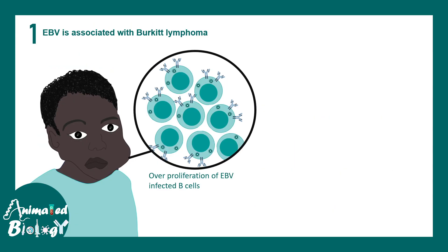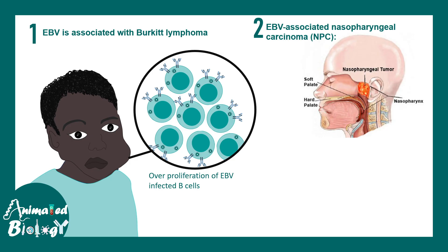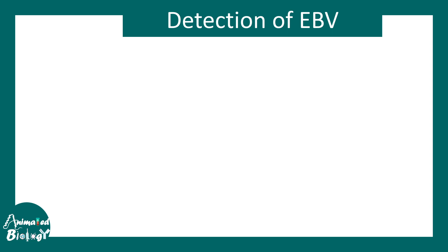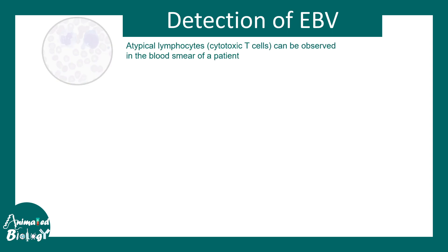EBV is associated with Burkitt's lymphoma, where many EBV proteins lead to uncontrolled cell cycle activity in B cells, resulting in massive malignant proliferation. EBV is also associated with nasopharyngeal carcinoma, where nasopharyngeal cells proliferate abnormally. EBV alone appears sufficient for causing many B cell lymphomas.